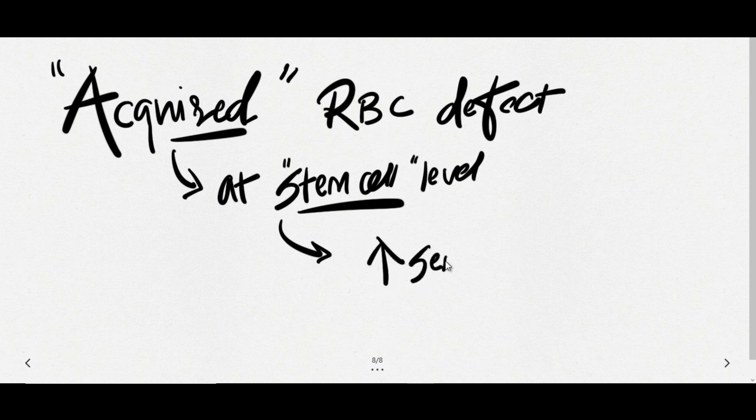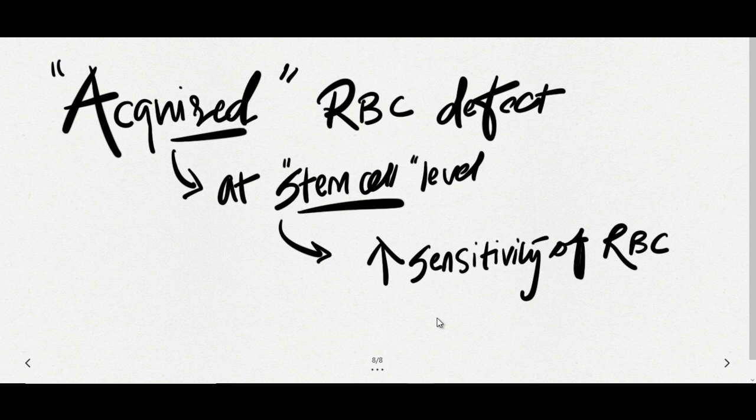And what does it do? It increases the sensitivity of RBC membrane to the complements. So RBCs are more liable to be destroyed by complement easily. It is an acquired RBC defect at the stem cell level which increases the sensitivity of RBC to complement.